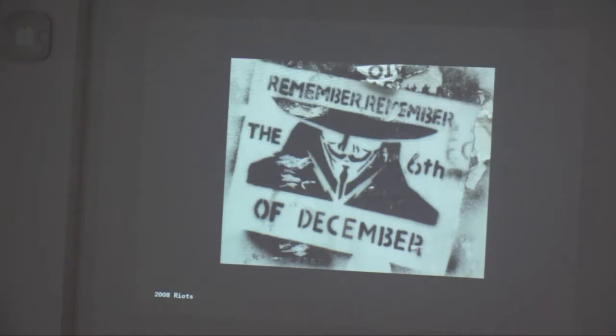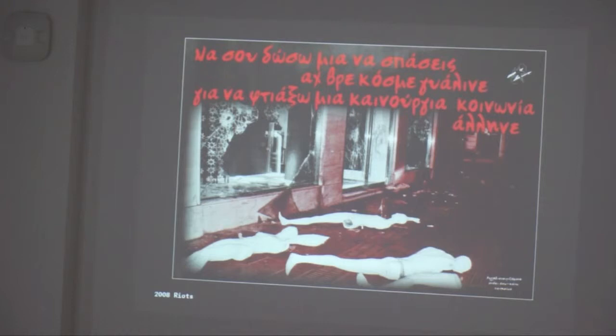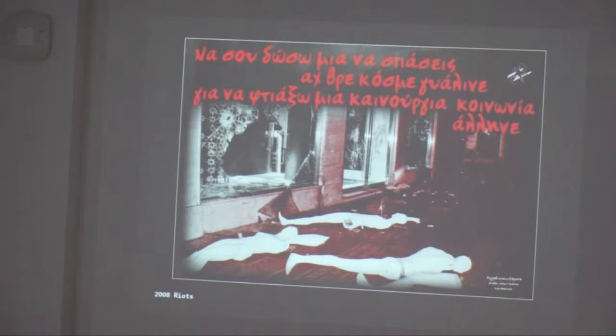Similarly, we see the use of popular culture and humor. An important example from Athens is the 'Remember the 6th of December' stencil that references the Guy Fawkes mask and the slogan from the Hollywood film V for Vendetta. In a comparable example, a poster created by a social center after the December events utilizes an image of a broken window from the riots and the lyrics of a popular protest song from the 1960s, which translates as: 'I will break this world that is made of glass and I will build another, new society.'